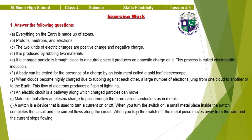Now we have the solved exercise for lesson nine. Question one — answer the following questions. Part A: everything on earth is made up of atoms. Part B: protons, neutrons, and electrons. Part C: the two kinds of electric charges are positive charge and negative charge. Part D: static electricity is produced by rubbing two materials together. Part E: if a charged particle is brought close to a neutral object, it produces an opposite charge on it — this process is called electrostatic induction.